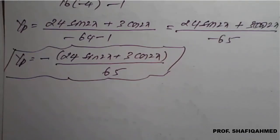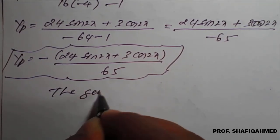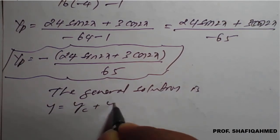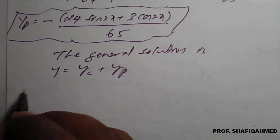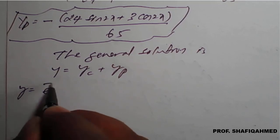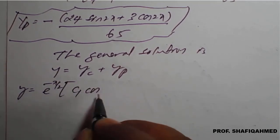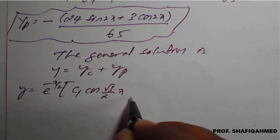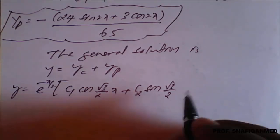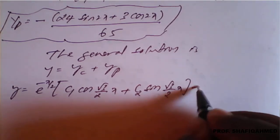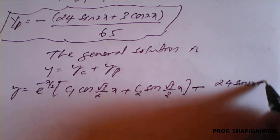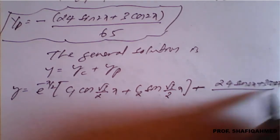The general solution is y = yc + yp. So y = e^(-x/2) [c₁cos(√3/2 · x) + c₂sin(√3/2 · x)] - [24sin(2x) + 3cos(2x)] / 65. This is the required general solution of the given non-homogeneous differential equation.